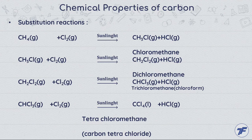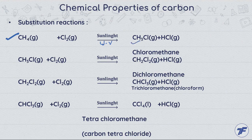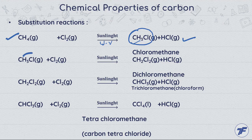Let us study this in detail. In the substitution reaction, methane reacts with chlorine in presence of sunlight — we can also write UV here. We get chloromethane and HCl gas is evolved. When this chloromethane is not the stable one, it still has hydrogen atoms, and chlorine has a more affinity, so it will replace the hydrogen from it. We get dichloromethane plus HCl gas.